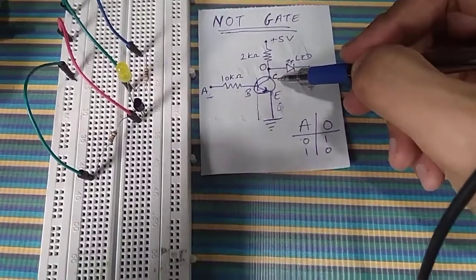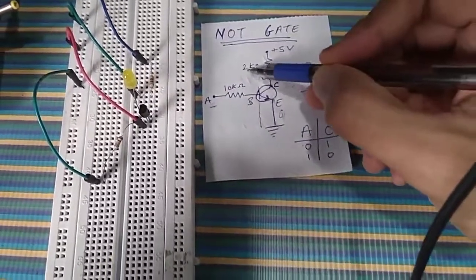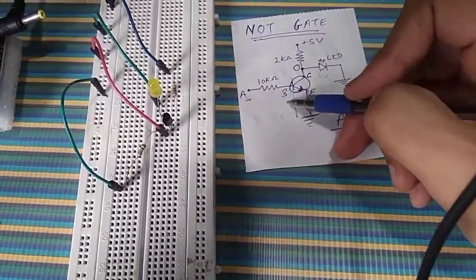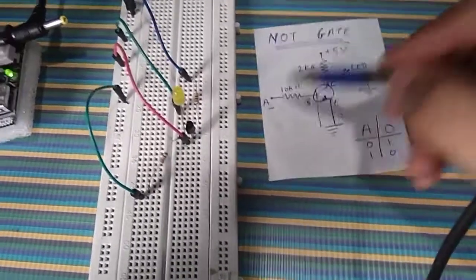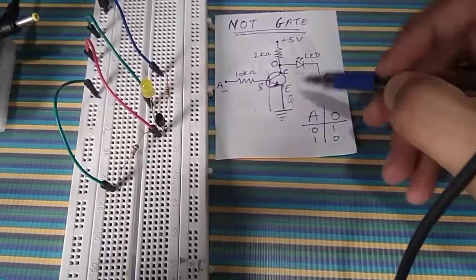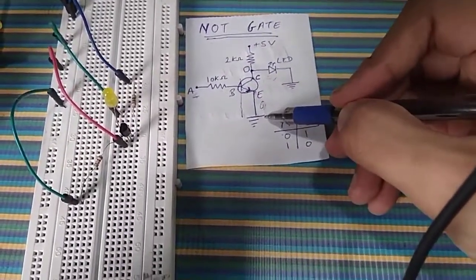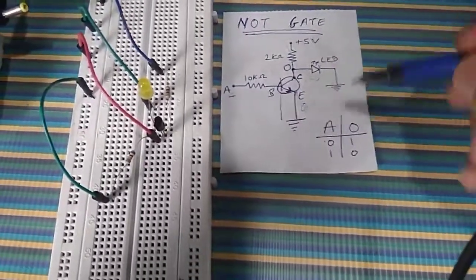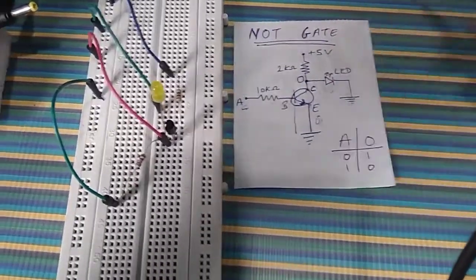In this circuit diagram, you can see the base, collector, and emitter. The collector is connected with the 5-volt power supply using a 2 kilo-ohm resistor. The base of this NPN transistor is connected to input A through a 10 kilo-ohm resistor, and the emitter terminal is connected directly to ground.